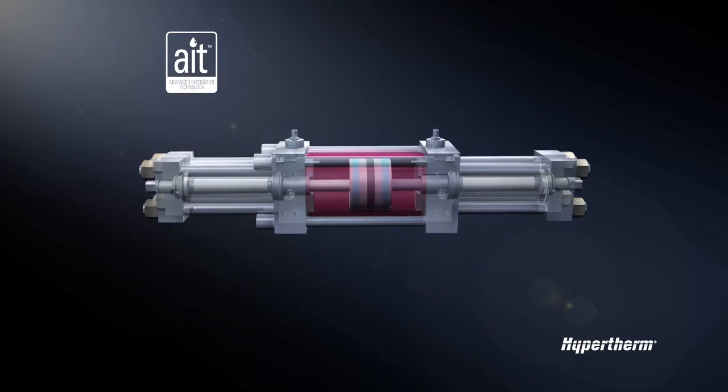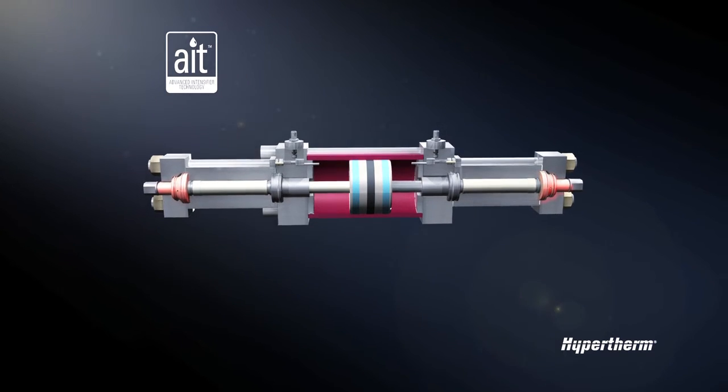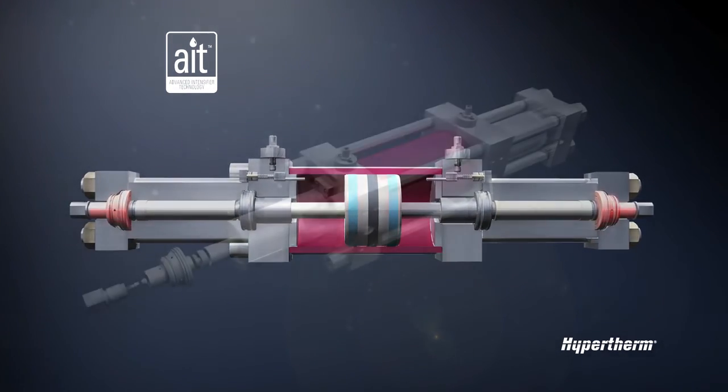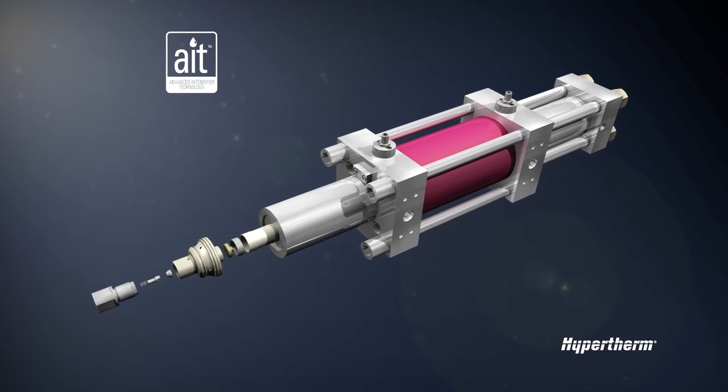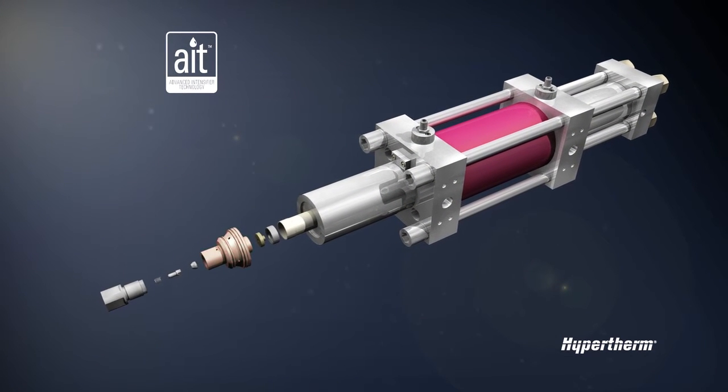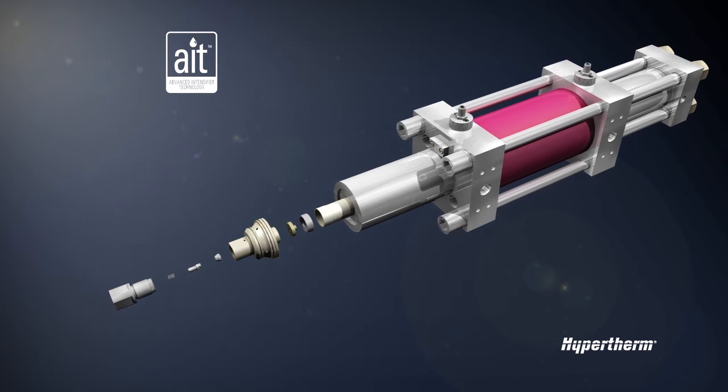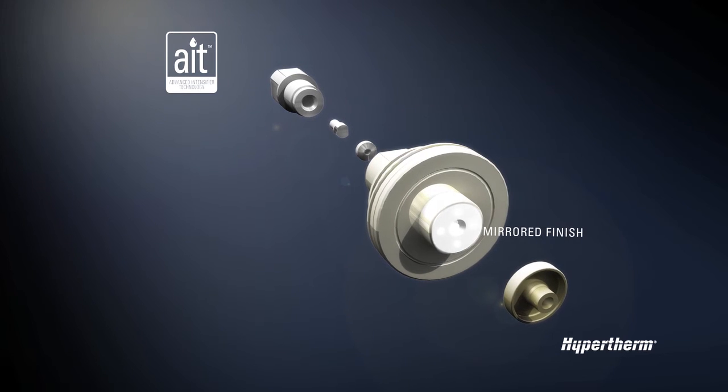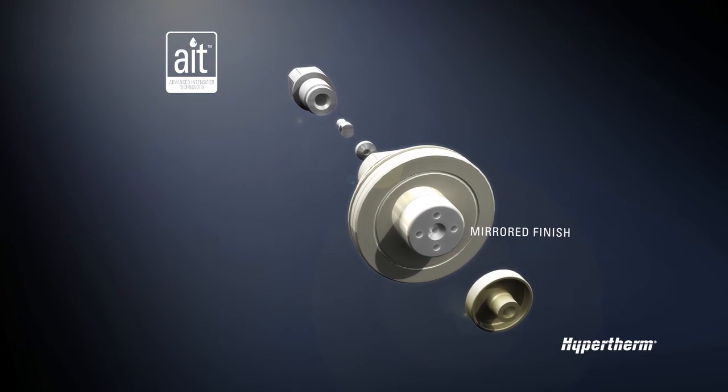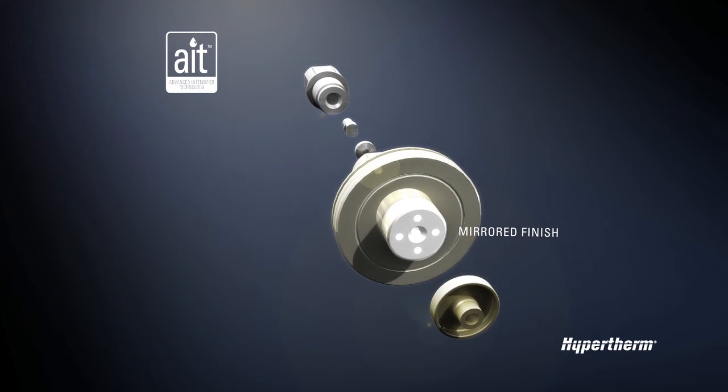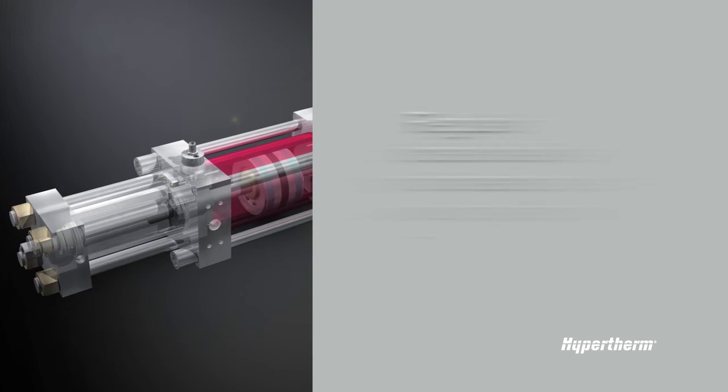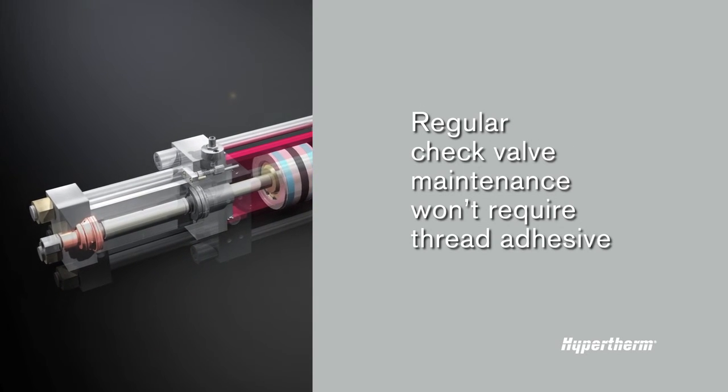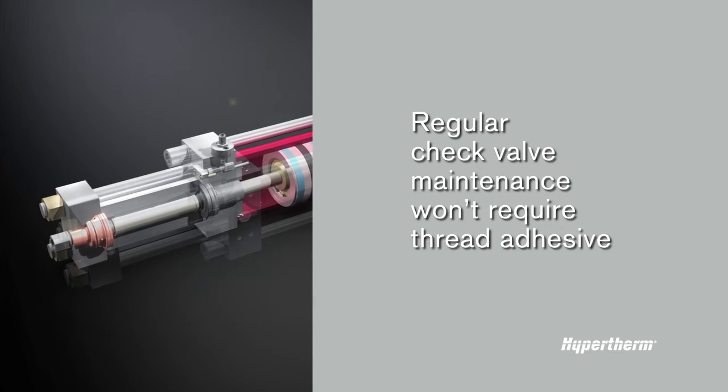Even the check valves offer advancements. The screwless low-pressure poppet design is faster to replace, but more importantly enables quick and nearly automatic evaluation of key contact surfaces. Removing the seals exposes the check valve, and if the mirrored finish is blemished, you can easily address it to maintain smooth operation without failure. Regular check valve maintenance won't require a single drop of thread adhesive, so there's zero lost production time waiting for it to cure.